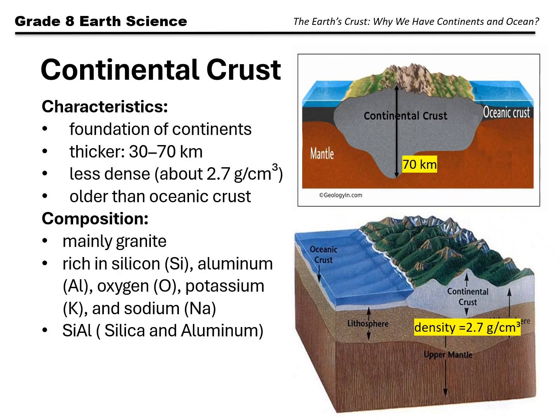The continents, or the continental crust, is much thicker than the oceanic crust. Its thickness varies — thinnest under lowlands and thickest under mountain ranges. Like in the Philippines, the Sierra Madre in eastern Luzon extends up to 2 kilometers from the surface, and the Himalayas in South Asia, where the crust can reach up to 70 kilometers.